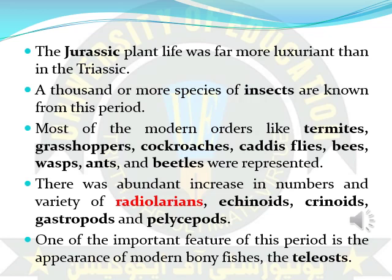It was also noticed that there were large numbers of radiolarians, echinoids, crinoids, gastropods, and plesiosaurs on the earth in that time period. It was also noticed that modern teleost fish such as sturgeons were firstly appeared in the Jurassic time period.